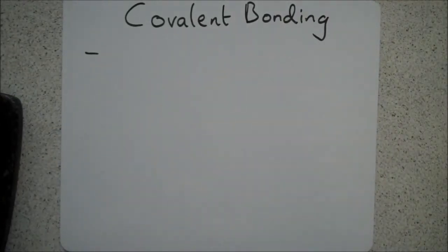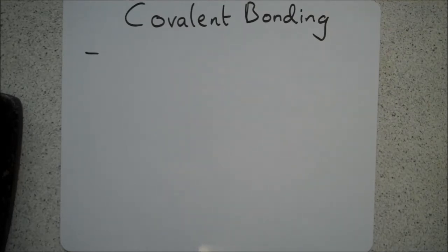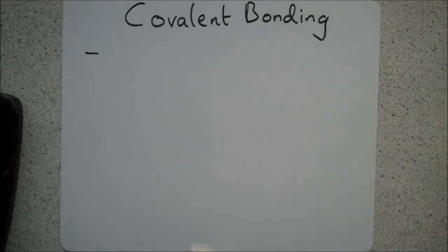In this video we'll be looking at covalent bonding. Previously I've done a video on ionic bonding — ionic bonding involved a metal reacting with a nonmetal, bonding ionically with the transfer of electrons. But nonmetals can react with one another, because there are lots of well-known compounds made of two or more nonmetals, like water H2O, carbon dioxide. The unusual thing is that in ionic bonding the nonmetal always wanted to gain electrons, but if two nonmetals were to bond ionically they'd both try to gain electrons, which isn't possible.